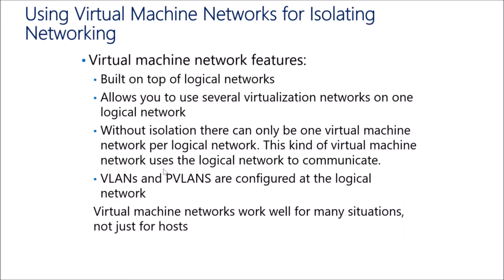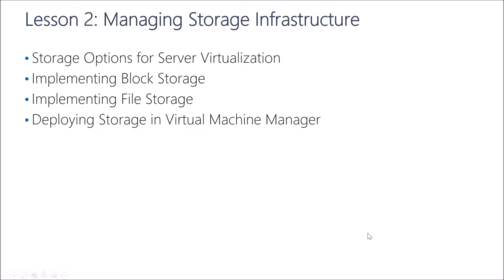Virtual machine networks are built on top of logical networks and allow you to use several virtualization networks on the one logical network. Without isolation there can only be one virtual machine network per logical network. VLANs and private VLANs are configured at the logical network level, and virtual machine networks work well for many situations beyond just hosts.